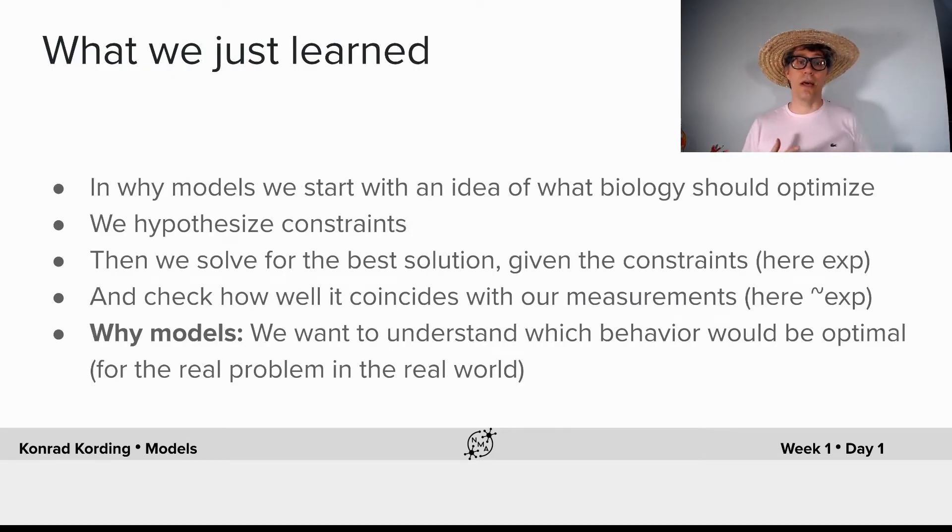What have we just learned? In Why models, we start with an idea of what biology should optimize, say the information throughput that we could get with the distribution of interspike intervals that we actually have. We then hypothesize constraints. In our case, that the average spike rate is immutable.